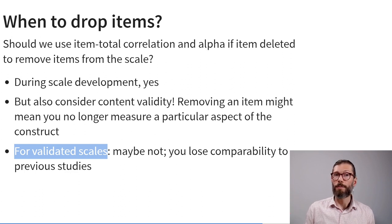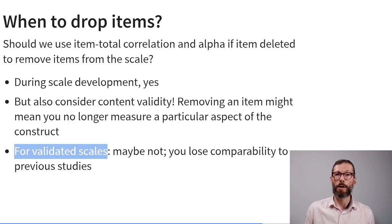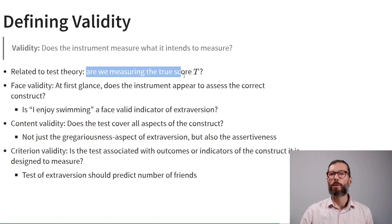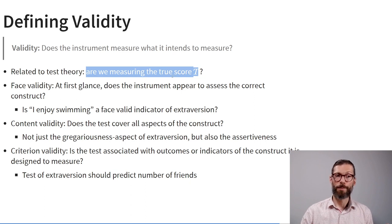When we drop items, our scale is no longer the same, so we can't compare results straightforwardly. The last topic is the validity of scales. Does the scale measure what it's supposed to measure? This is related to test theory, because validity tells us whether we are measuring the true score t.